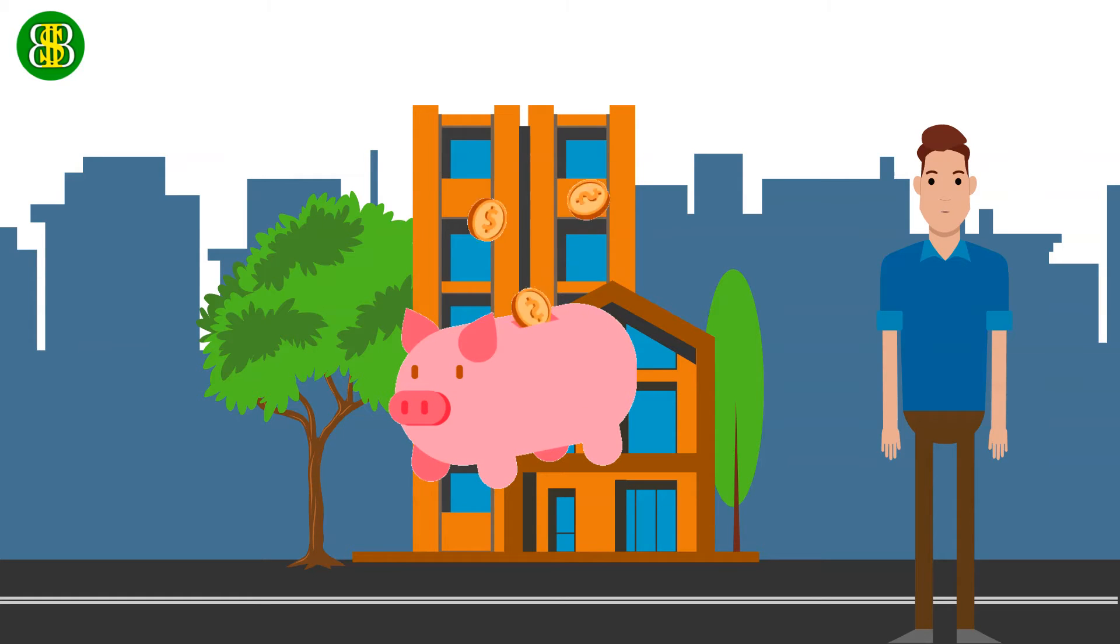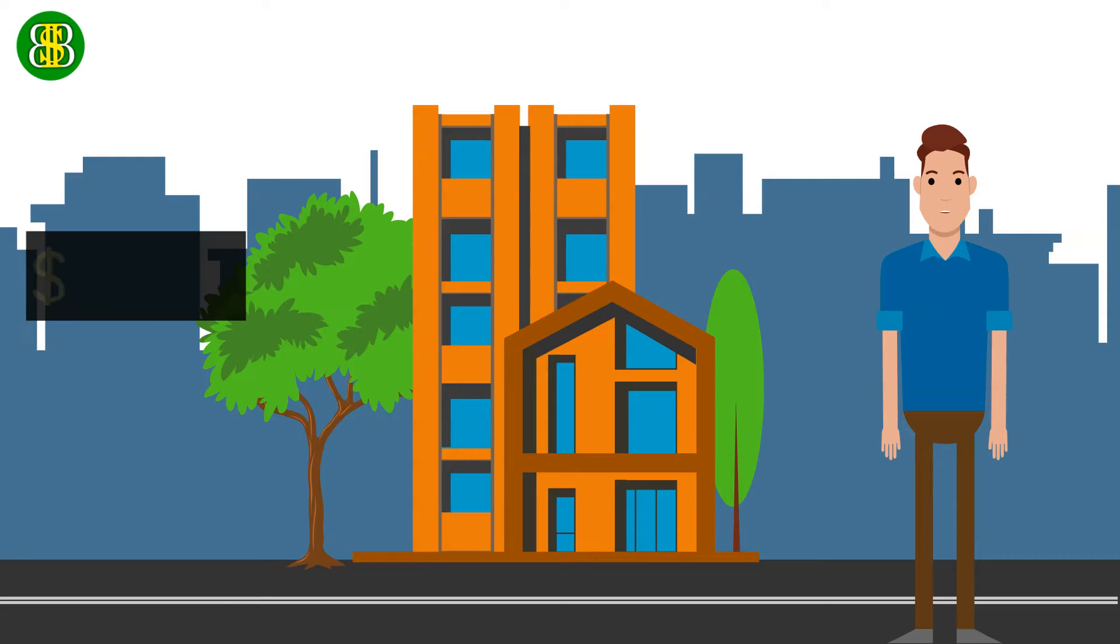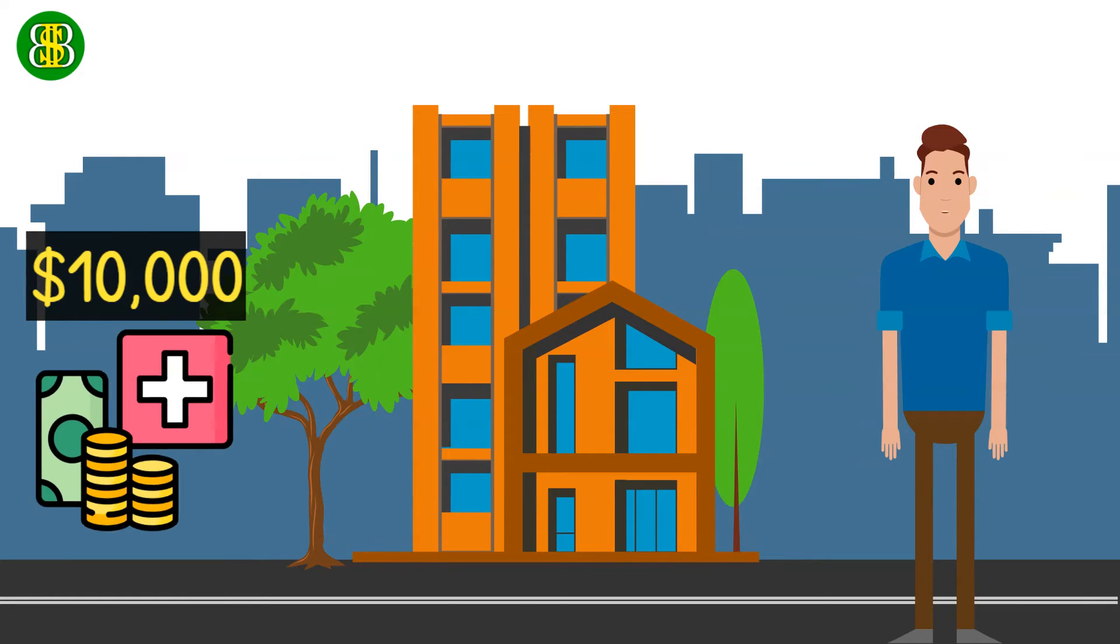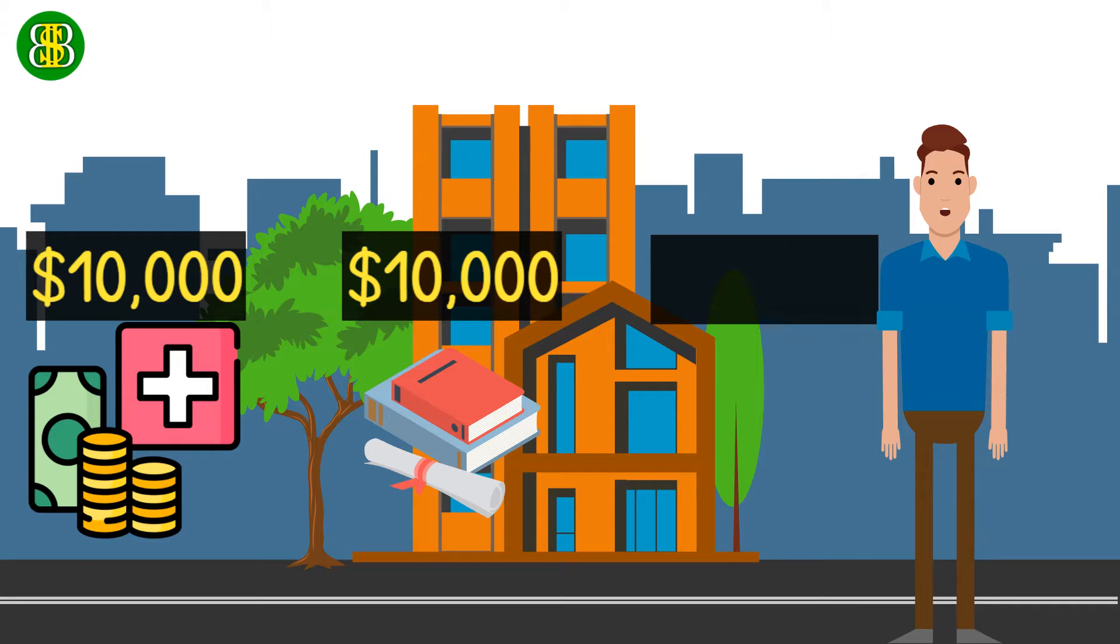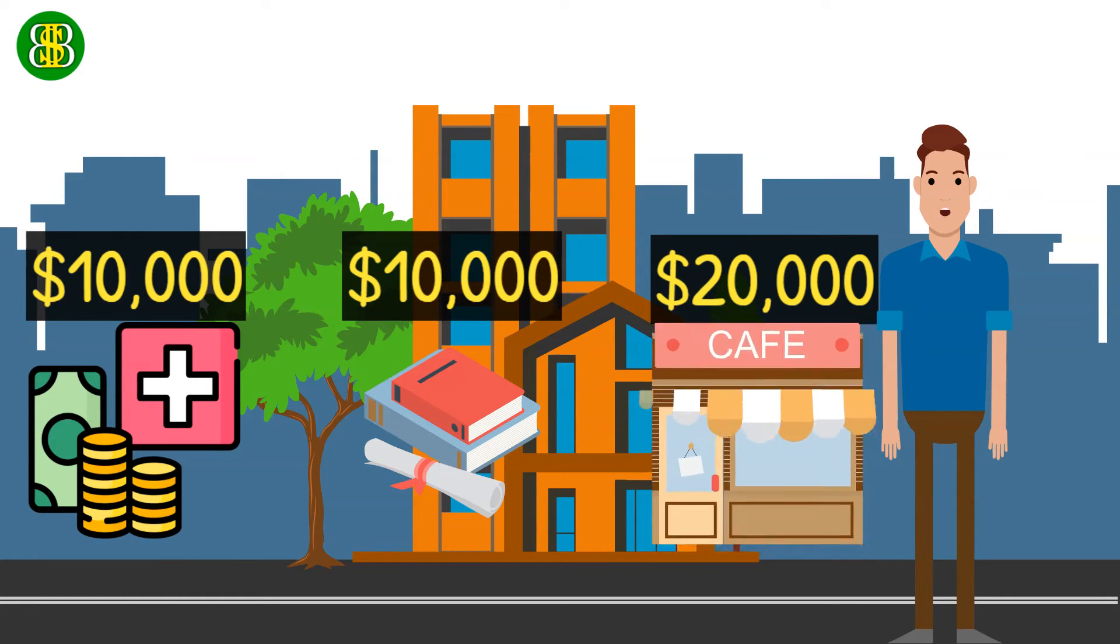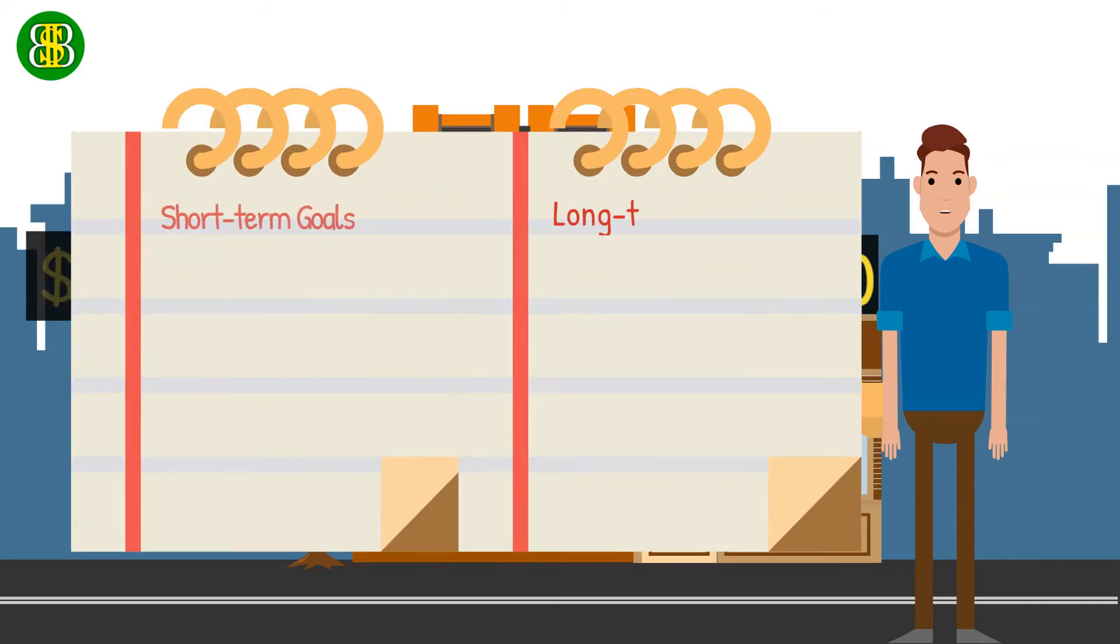If you want to be able to save fast, you need to have a purpose for why you are saving. For example, you want to be able to save $10,000 for your emergency account, $10,000 for your child's education fund, and $20,000 for the capital of the business you want to start.